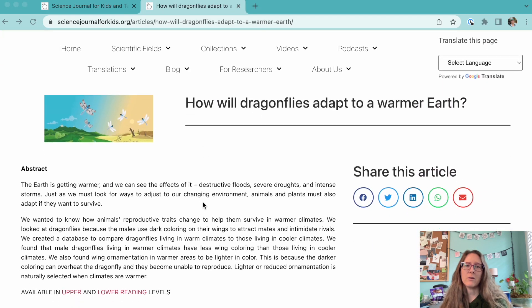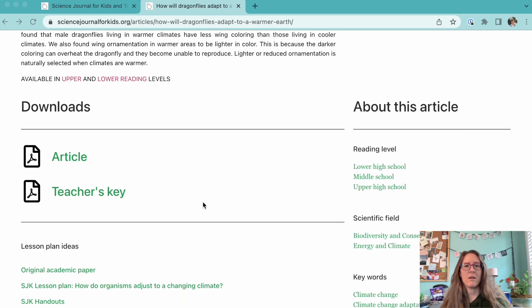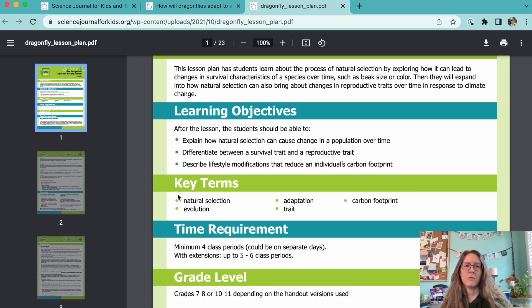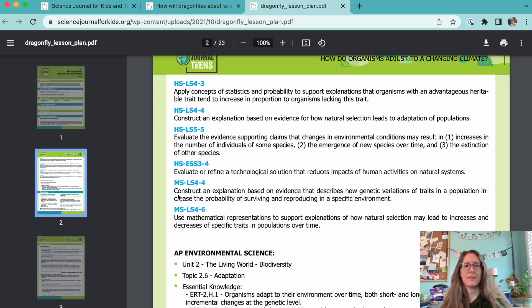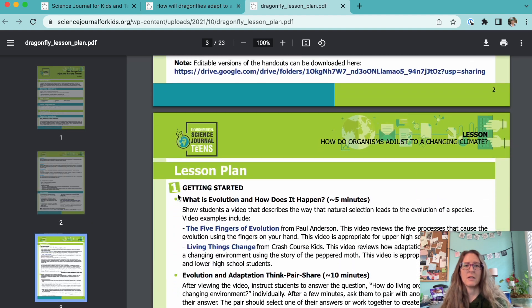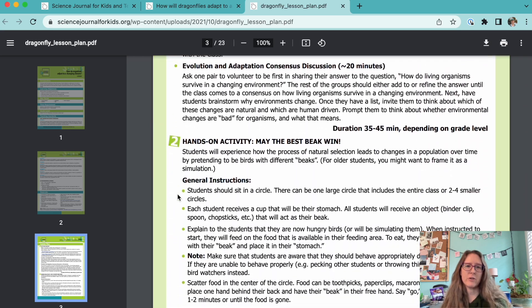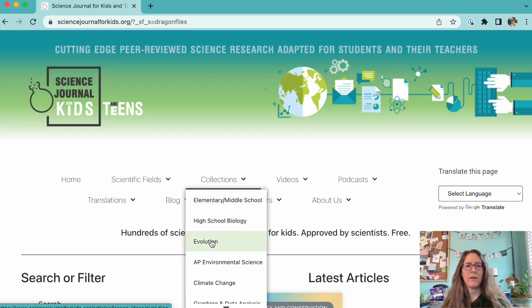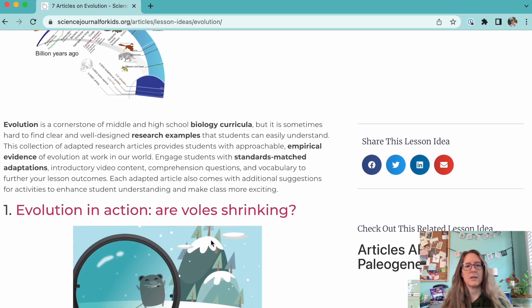This activity would also go along great with any of our articles on evolution like how will dragonflies adapt to a warmer earth which has a great lesson designed by a Science Journal for Kids educator to look at the role of different survival traits in natural selection. Or you can check out our collection of evolution articles under our collection drop down menu.